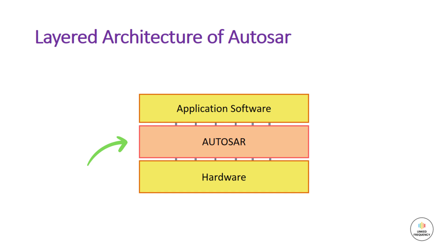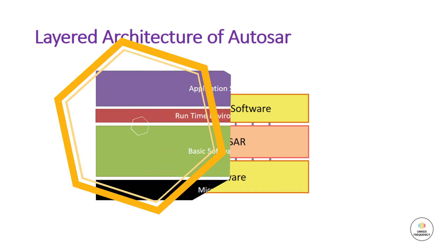Let us see the next image wherein you can see the AutoSAR layer in between the application software and the hardware. The AutoSAR layer architecture makes the hardware and the software independent of each other. The top layer of the AutoSAR architecture is independent from the underlying layer. So now the software need not have the complete details of the hardware — hence, the same software can be used with different hardware without altering the current working module's functionality.